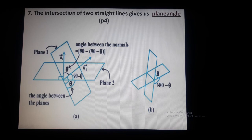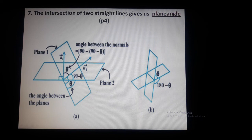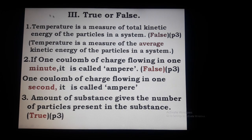The intersection of two lines gives us the plane angle — the angle between these two lines is called the plane angle. Next: true or false will be done in the next class. Thank you, students.